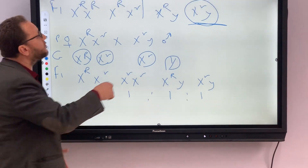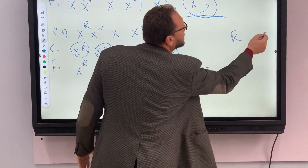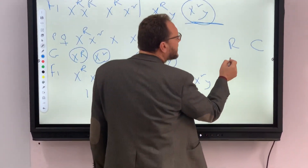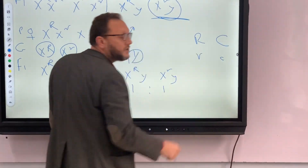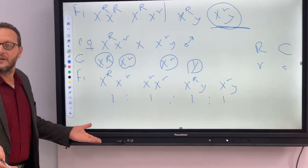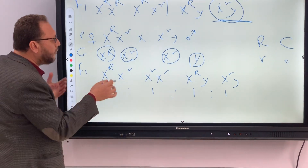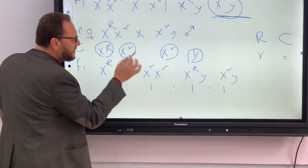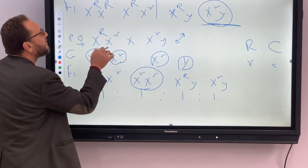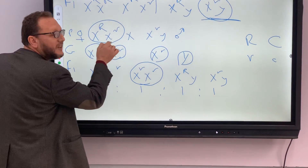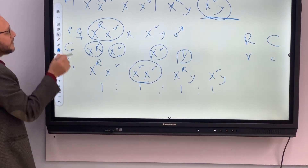You can replace the letter R capital with the letter C capital, and you can replace the letter R small with the letter C small. It doesn't matter — as long as you use capital for dominant and small for recessive. For the disease to appear in females, we must have a carrier female and a diseased male.